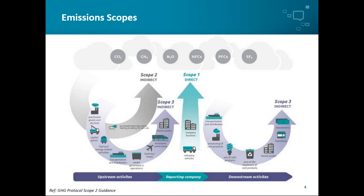Scope 3 emissions are also considered indirect emissions, which occur throughout your supply chain, either upstream or downstream of your operations. Some examples include waste collection, your water supply, or any transport not owned by the company, such as business travel or commuter travel. The remainder of this presentation is going to focus on scope 2 emissions, which represent one of the largest sources of GHG emissions globally — the production of electricity and heat now accounts for at least a third of global GHG emissions. For many companies, scope 2 emissions represent quite a significant proportion of your overall carbon footprint.